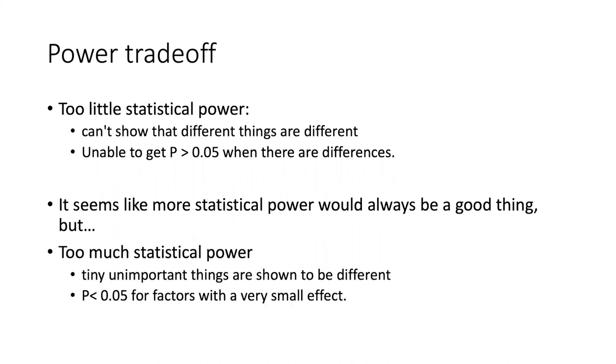However, it turns out there are certain conditions where it's problematic to have too much statistical power. When you have a lot of statistical power, you are able to show that tiny things that actually aren't very important can be shown to be causing differences. In other words, we can get p is less than 0.05 when we have factors with a very small effect.